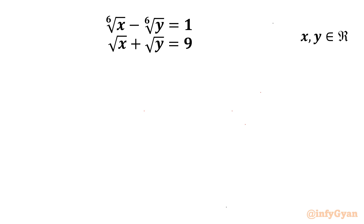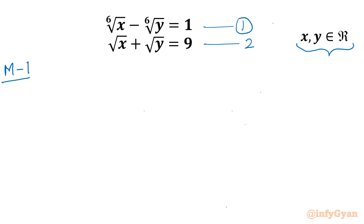Welcome back to Infigyan, my dear friends. In today's video we are having one very interesting question on system of equations. We have the 6th root of x minus the 6th root of y equal to 1, and the square root of x plus the square root of y equal to 9. We have to find only the real solutions. I will showcase two different ways to attempt this problem, so I will write Method 1 with equation number 1 and 2.